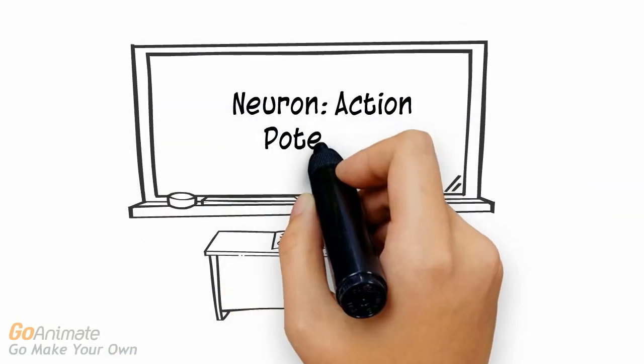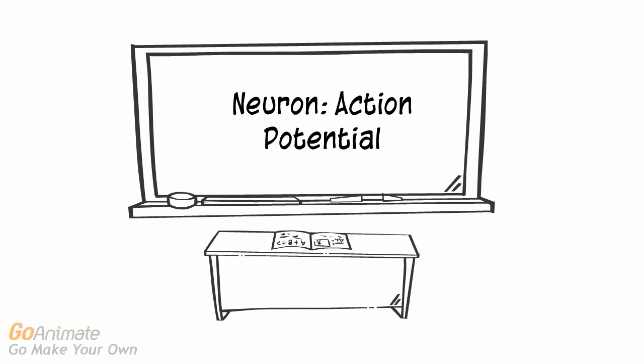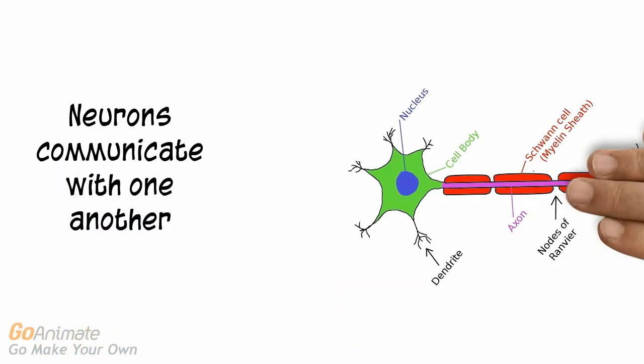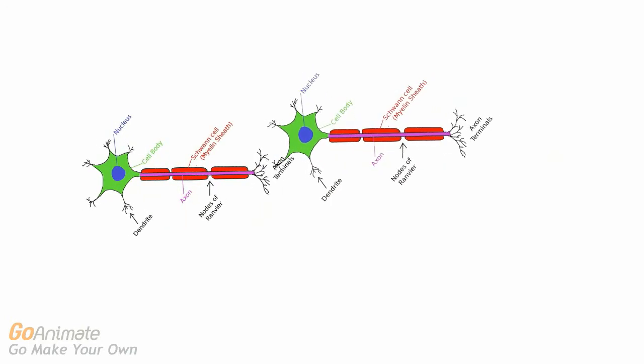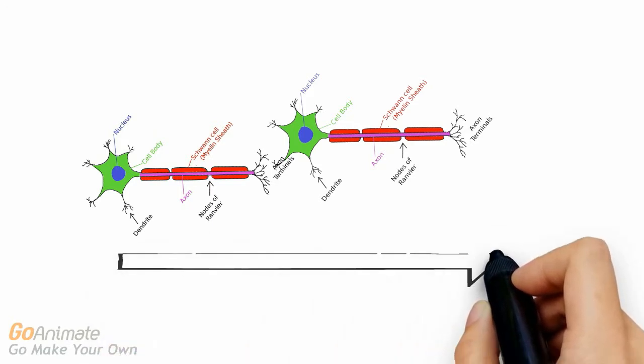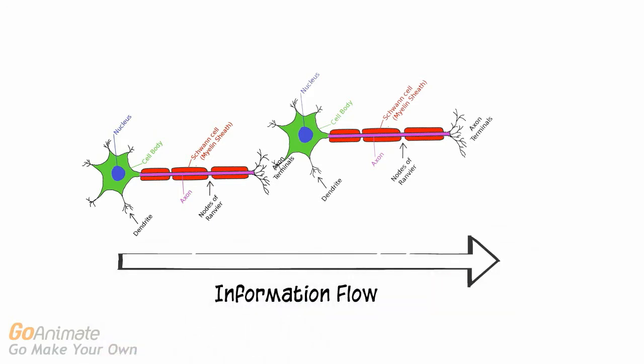Let's learn about action potentials. Nervous system cells called neurons can communicate with one another. One neuron communicates with another by sending a message called a synapse.